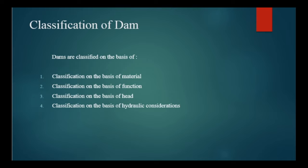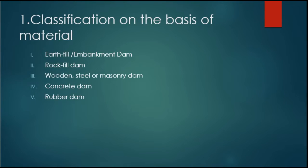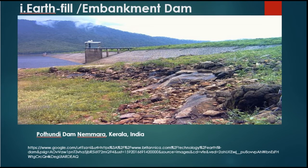Moving through the classification of dams, dams are classified on various bases: first, on the basis of material; second, on the basis of function; third, on the basis of head; and fourth, on the basis of hydraulic design considerations. On the basis of material, dams are classified as: first, earth fill or embankment dam; second, rock fill dam; third, wooden, steel, or masonry dam; fourth, concrete dam; and fifth, rubber dam.